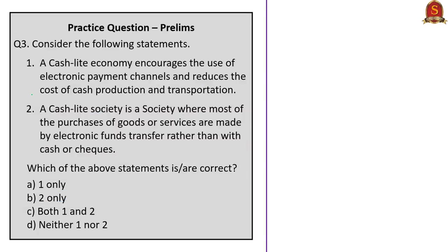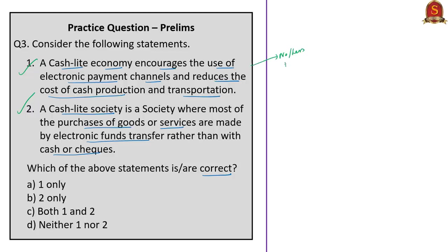The third question: 'Consider the following statements. Statement 1: A cash-light economy encourages the use of electronic payment channels and reduces the cost of cash production and transportation. Statement 2: A cash-light society is a society where most purchases of goods or services are made by electronic funds transfer rather than with cash or checks.' Both statements are correct. In a cash-light economy there is a reduction in usage of cash in circulation, and a society where most purchases are made by electronic funds transfer is called a cash-light society. The answer is option C, both 1 and 2.